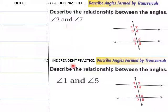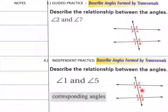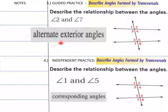Okay, another set — guided practice, numbers 3 and 4. Describe the relationship between angle 1 and angle 5: they are corresponding angles, on the upper side of one of the lines where the transversal crosses. Angles 1 and 5, 2 and 6, 4 and 8, and 3 and 7 are all corresponding pairs. Angle 2 and angle 7 are alternate exterior angles.